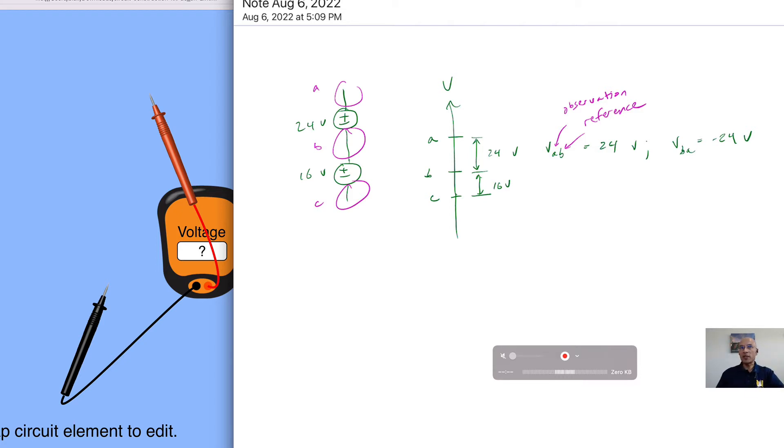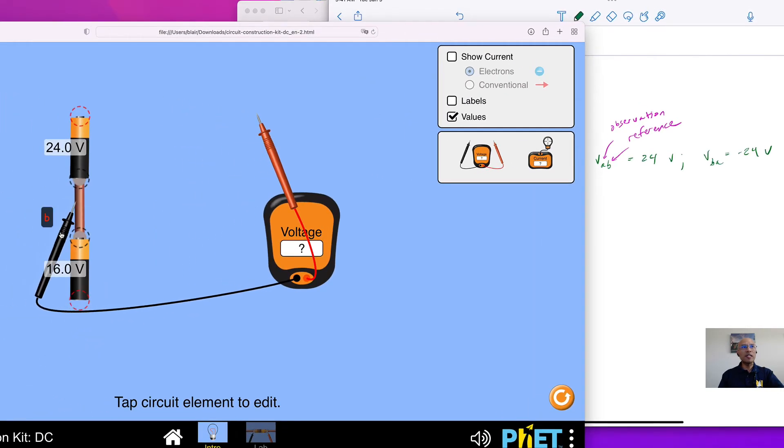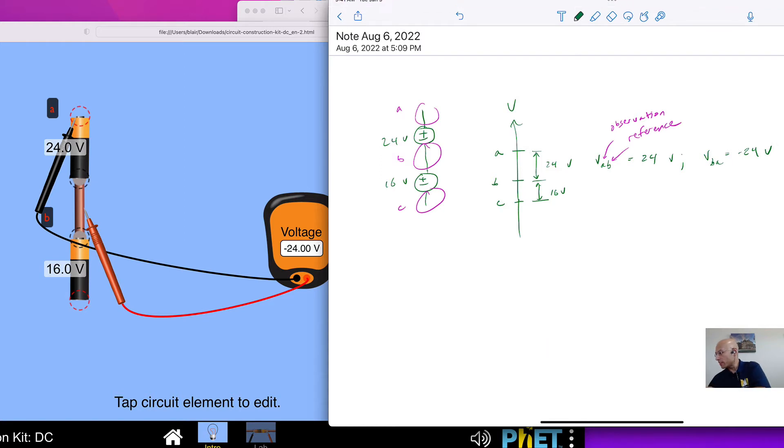So let's actually illustrate that right now. So in the circuit, if I move this, this is B here. And then I put this on A, and you're going to see the 24 volts. Now I take, let's move the reference to A, and placing the observation probe on B, I get negative 24 volts. And as you can see here, that's exactly what we wrote down. Similarly, we can write VBC is 16 volts, and VCB is negative 16 volts.